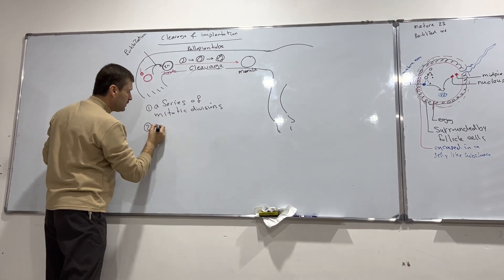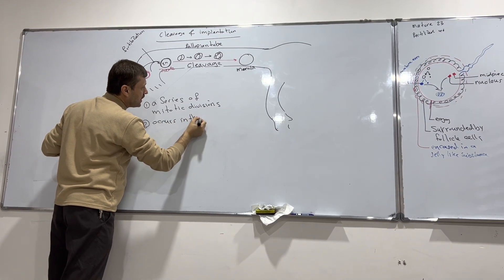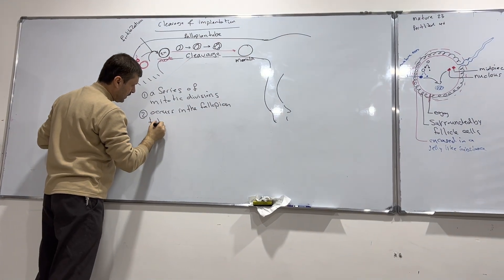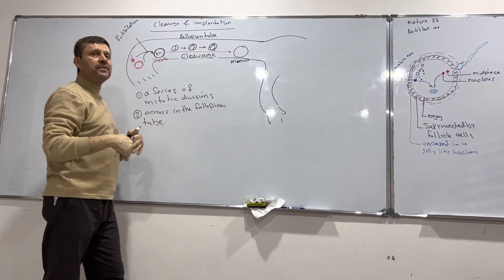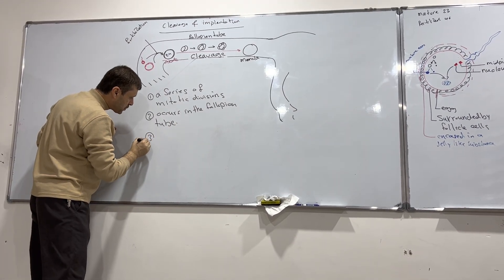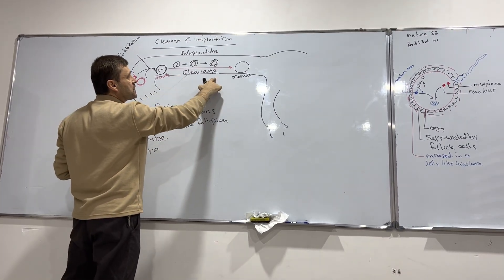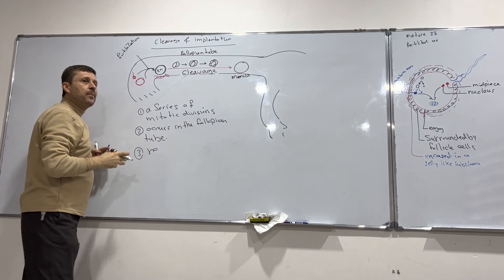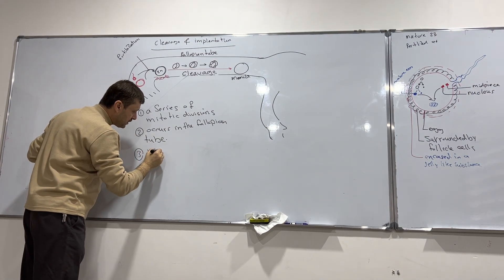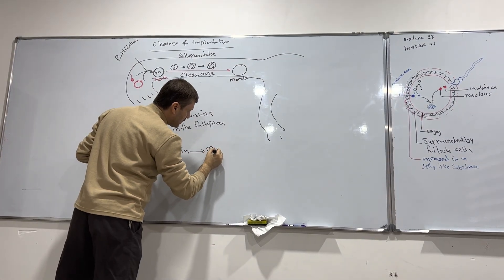Cleavage is a series of mitotic divisions. It occurs within the fallopian tube, after fertilization. It results in a ball of dividing cells called morula.